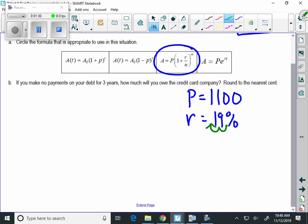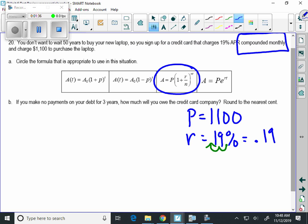It's compounded monthly. That's our n value, and just think about how many months in a year, which is 12.